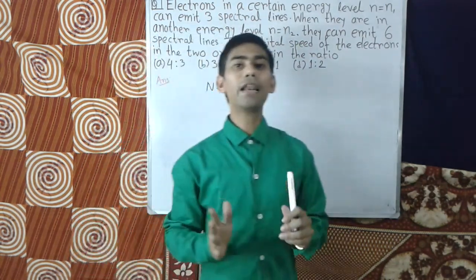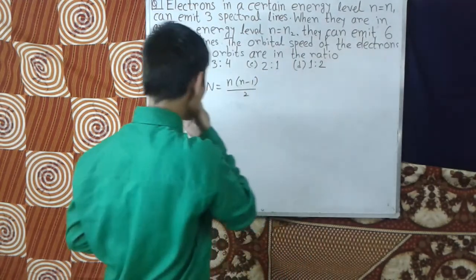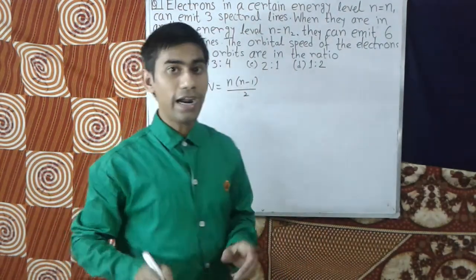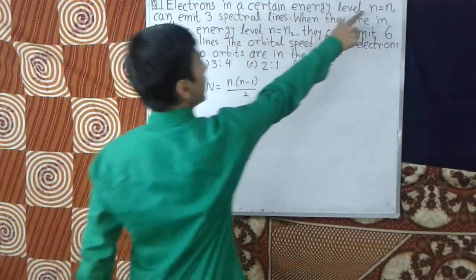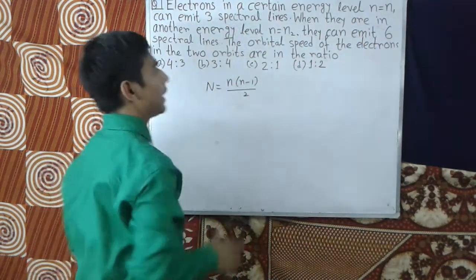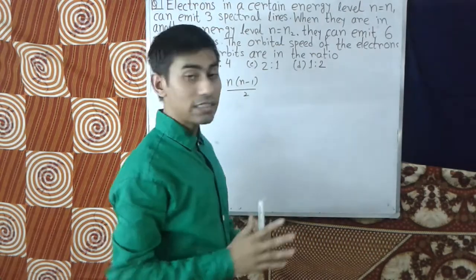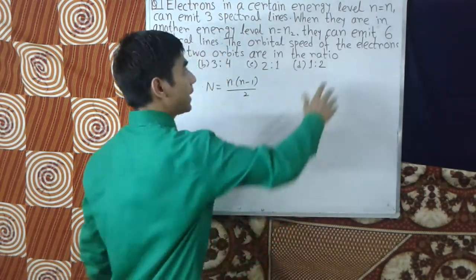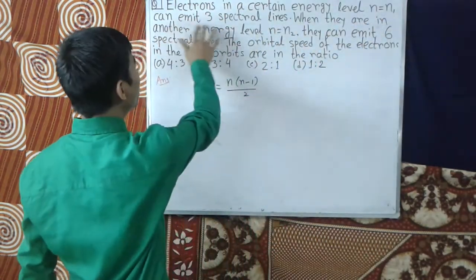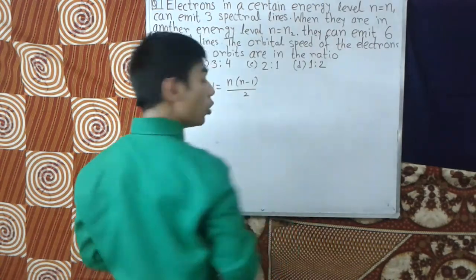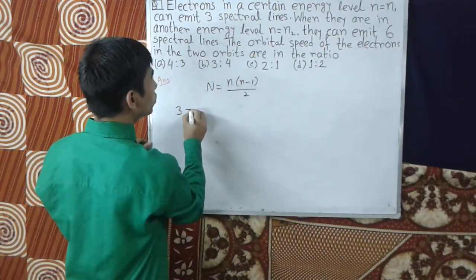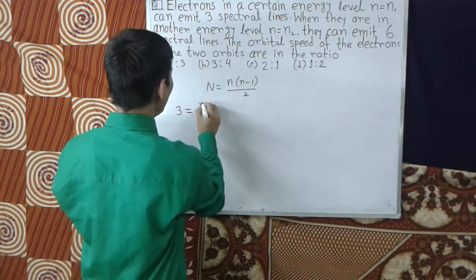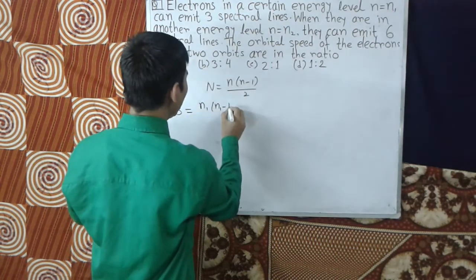Now given that in the first case at n=n1, three spectral lines are emitted. So in the first case we may write 3 = n1(n1-1)/2, or 6 = n1² - n1.